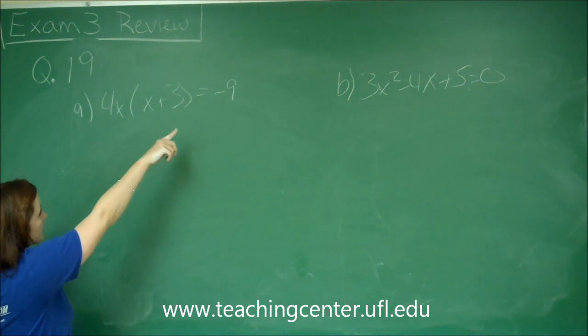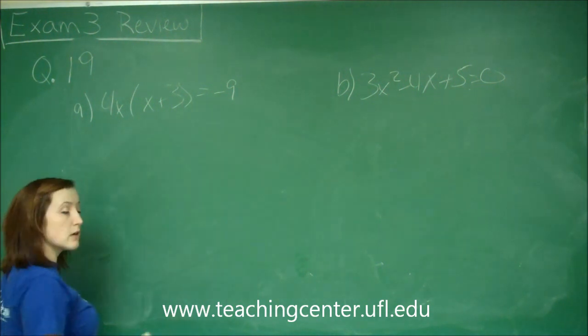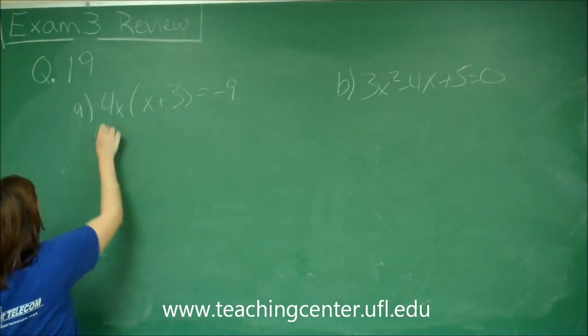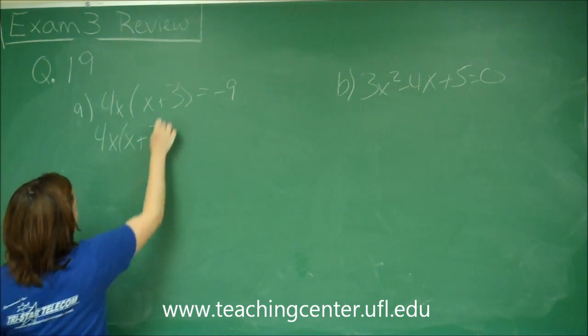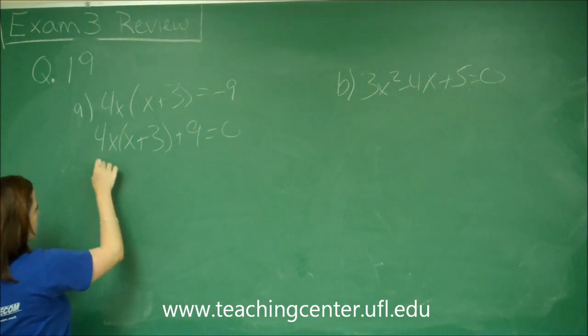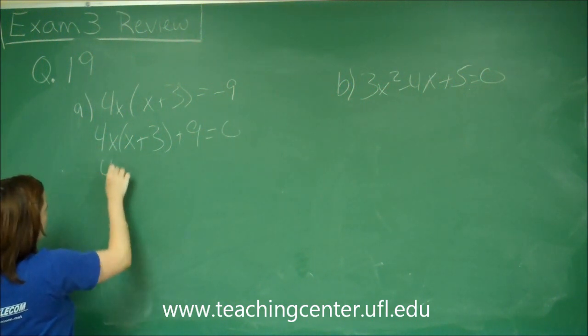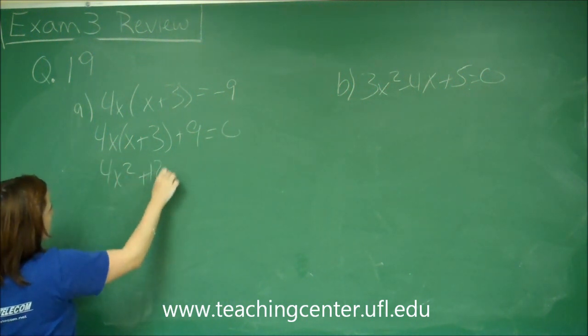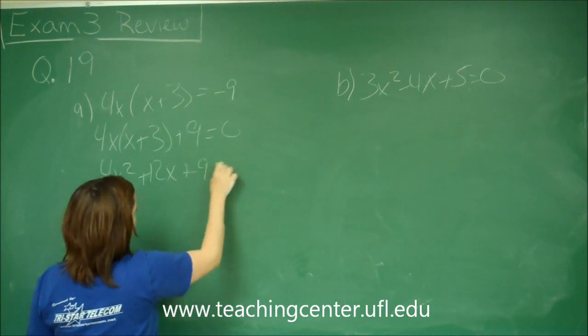What we're going to do first here is bring the 9 over because we know to solve an equation it has to be set equal to 0. Then I'm going to distribute my 4x and I get 4x squared plus 12x plus 9 equals 0.